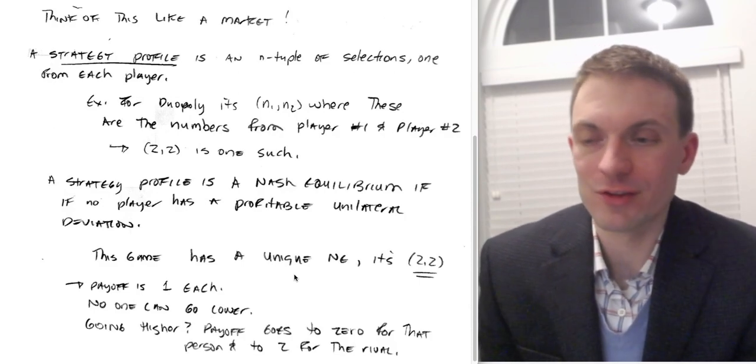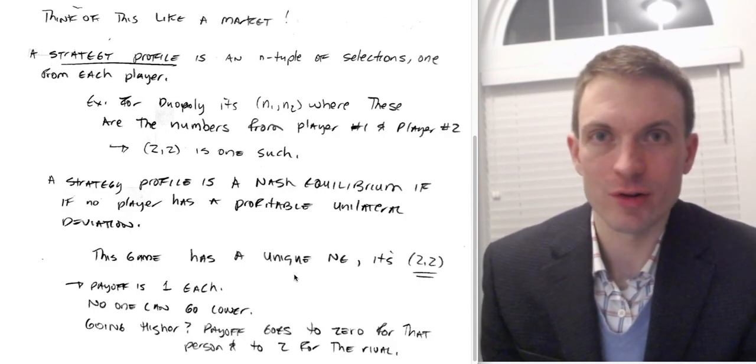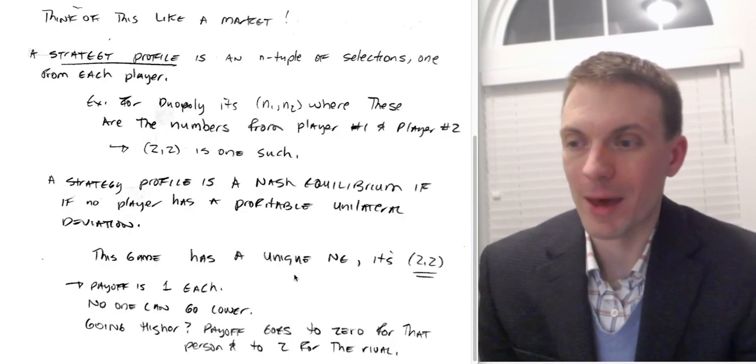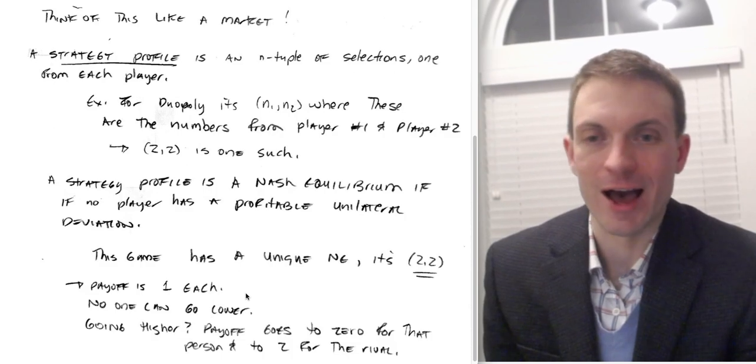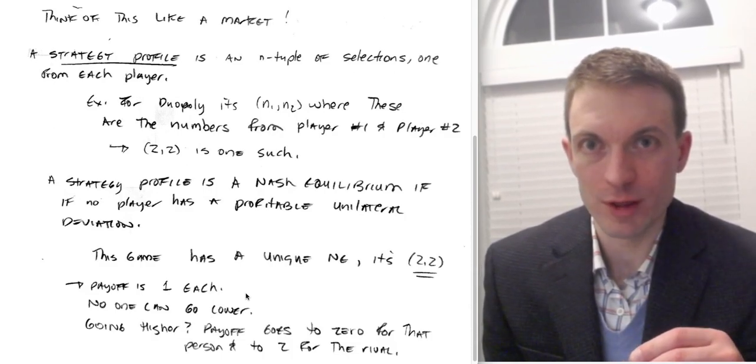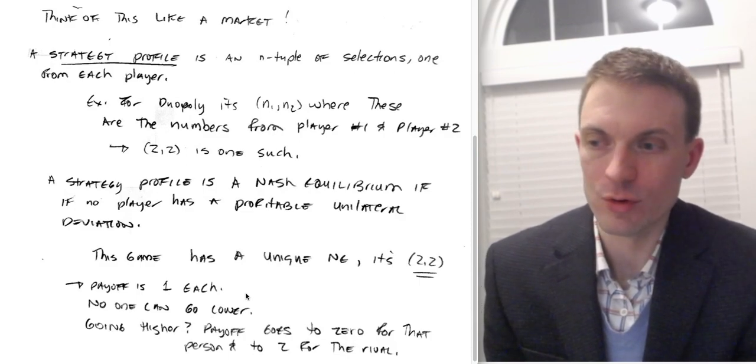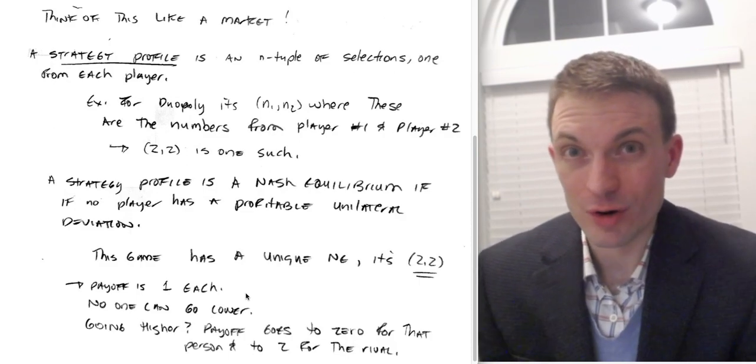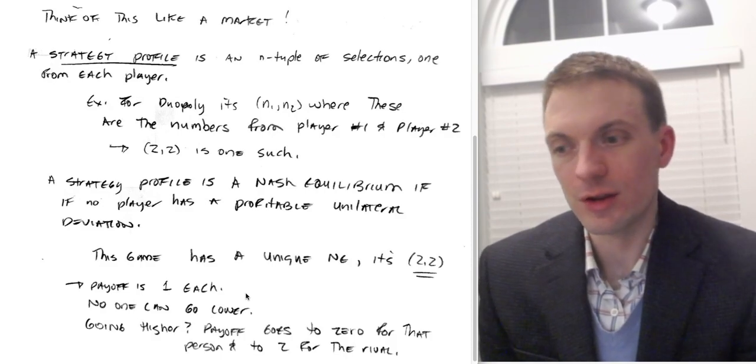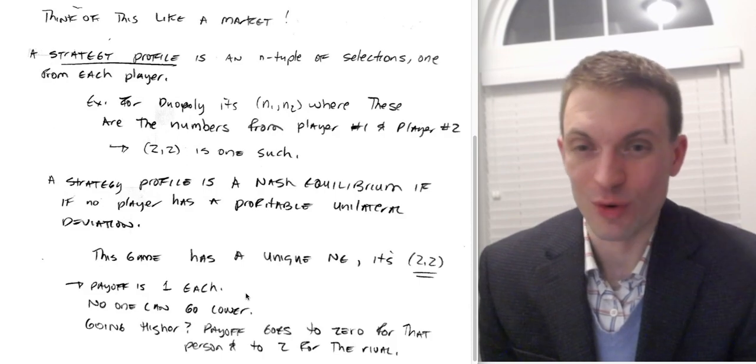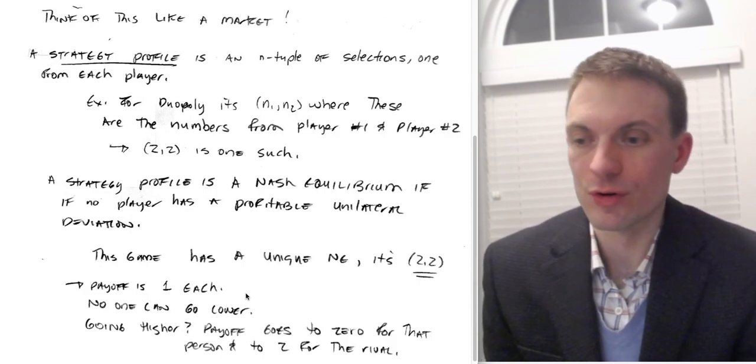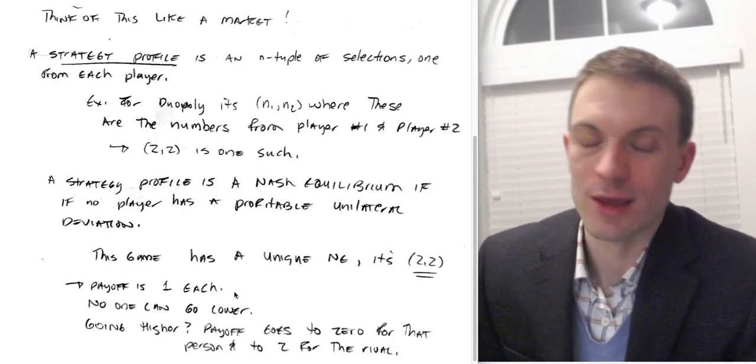Ultimately, we find this game has a unique Nash equilibrium where both players select 2. The payoff would be 1 each because you've tied. So your payoff is your number divided by the number of people you've tied with in the case of ties. So this would be 2 divided by 2 or 1. And no one can go lower because we're not allowing any lower numbers.